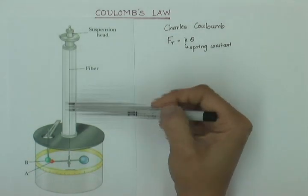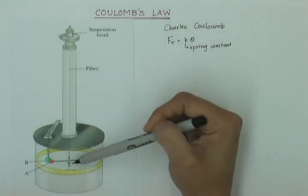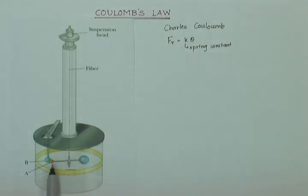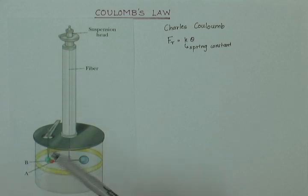Coulomb suspended the torsion wire from one end and at the other end he attached an insulating bar. To one end of the insulating bar, he attached a metallic sphere A. And this sphere is just as a balance so that the rod always remains horizontal. Then he took another metallic sphere B and attached it to a glass rod. And this sphere could be inserted and removed from the apparatus.